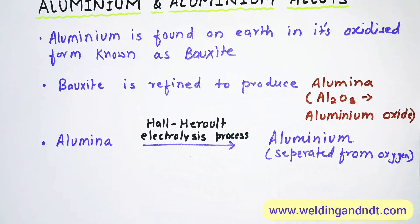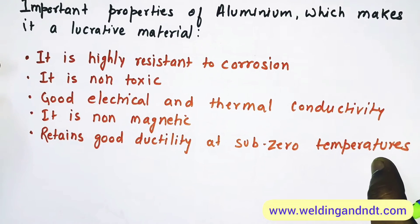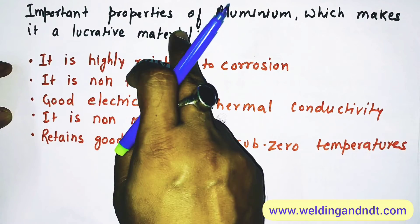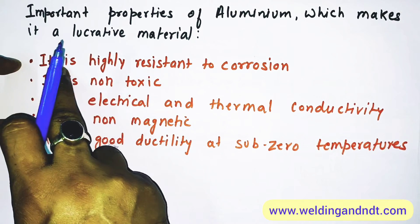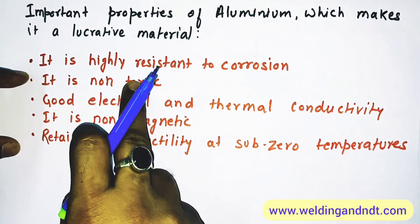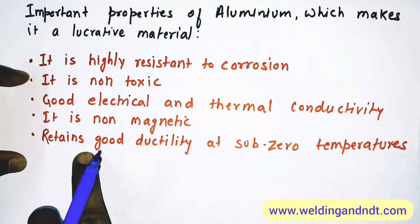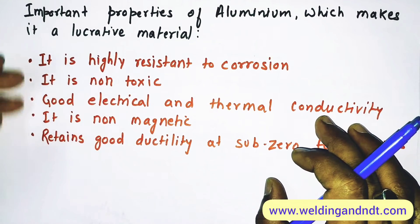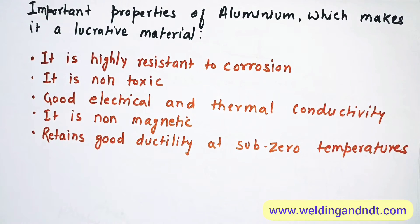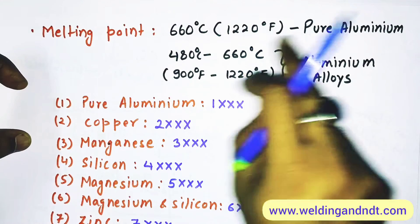Now, very briefly, we'll look at the properties that make aluminum a very lucrative material: it is highly resistant to corrosion, non-toxic, has good electrical and thermal conductivity, is non-magnetic, and has good ductility at sub-zero temperatures. These are some of the important properties which make aluminum a very attractive material.